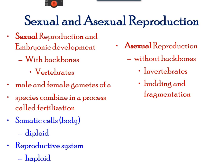Most animals reproduce sexually. Usually there are vertebrates — that is, they have a backbone. Offspring pass through a series of developmental stages. Animal bodies are composed of diploid cells, and haploid cells are only present in reproductive structures, such as the egg and the sperm.